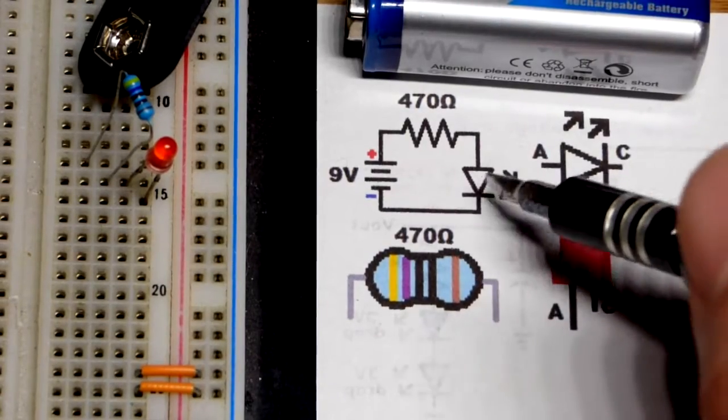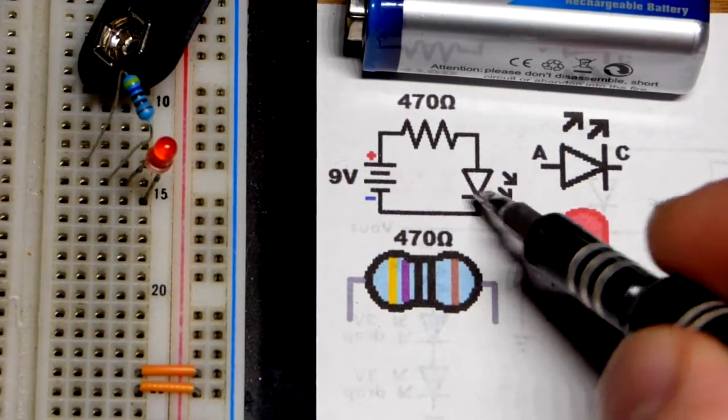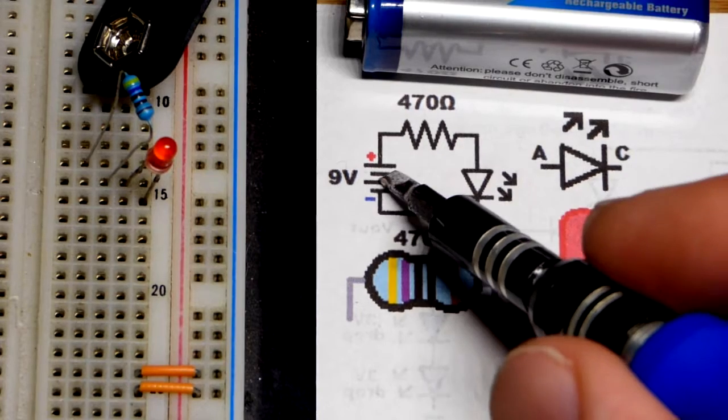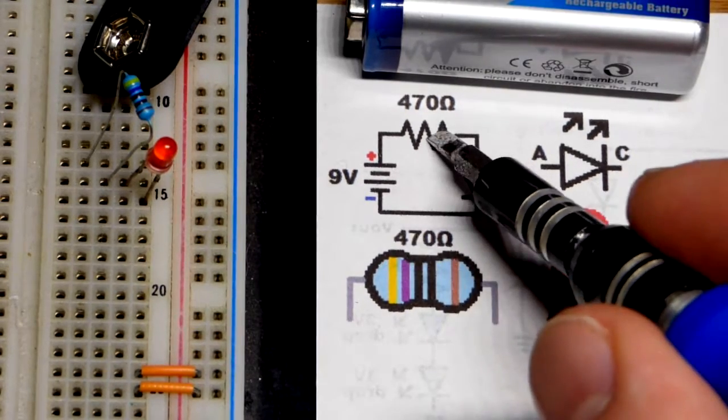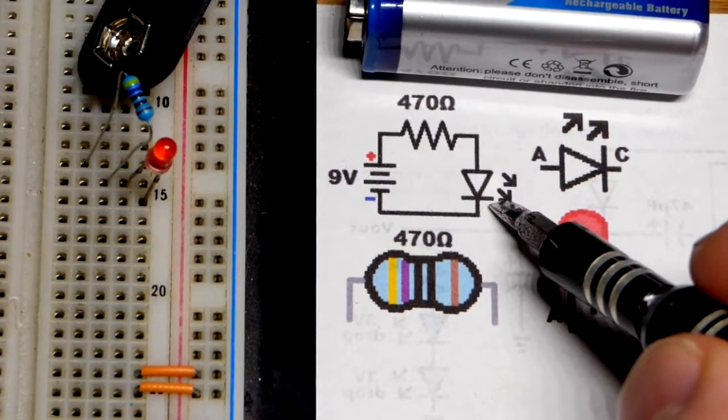Building circuits from schematics is an important skill in electronics. We're going to start with one of the most basic circuits: a 9 volt battery powering an LED protected by a resistor.